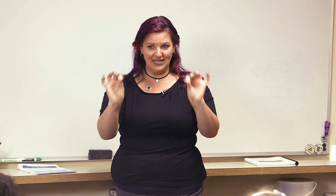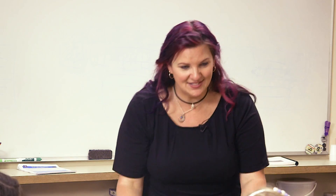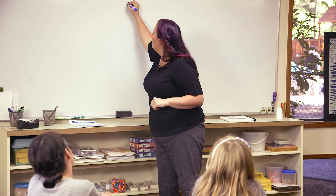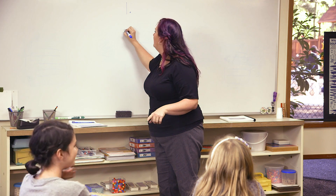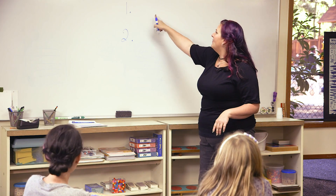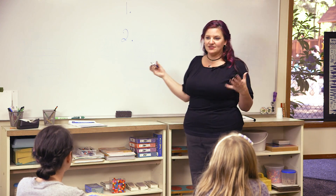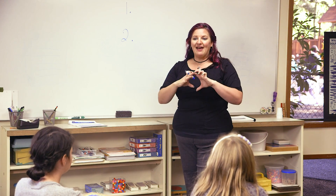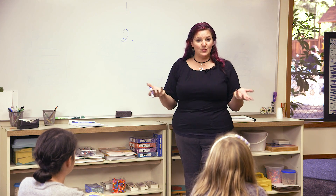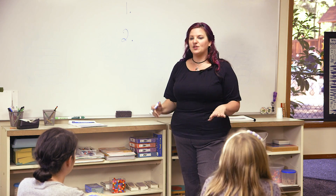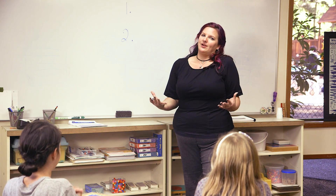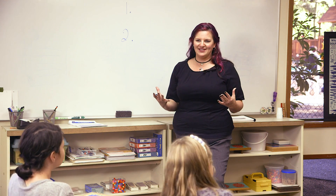I'm going to give you two each a dice and we're going to have a Dice Race. You'll be number one and you'll be number two and we are going to move forward a certain amount based on what you roll. We're going to have three rolls and whoever gets the farthest at the end of those three rolls wins. Roll number one.